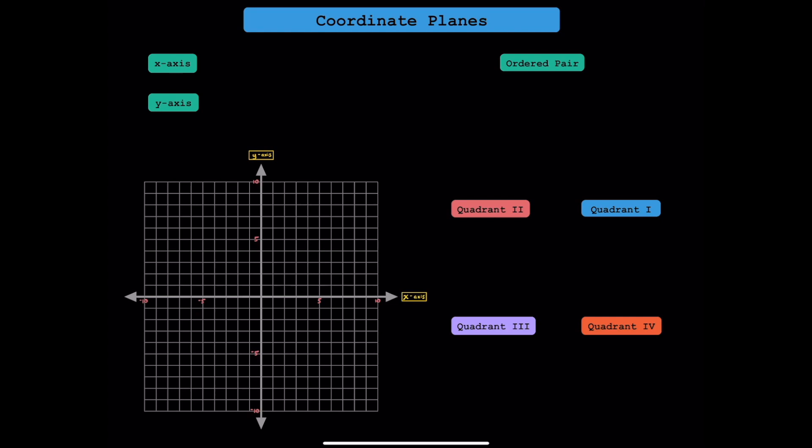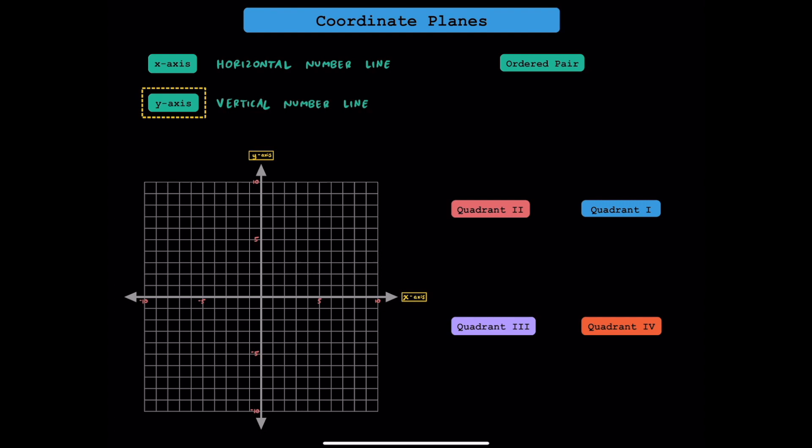Hey everyone, I hope you're doing well today. This video is going to be a lesson about the coordinate plane. The coordinate plane is basically just a combination of the x-axis, which is a horizontal number line, with the y-axis, which is a vertical number line.